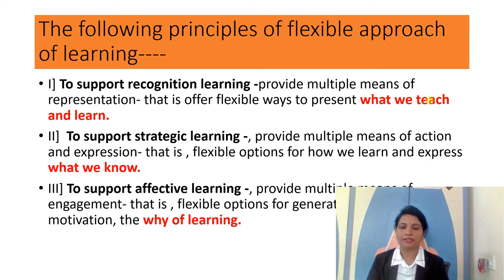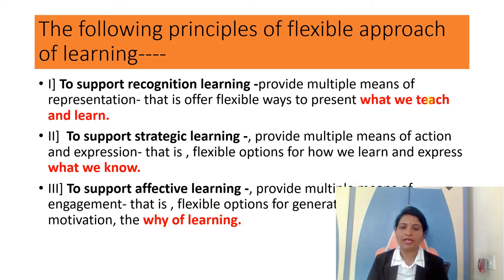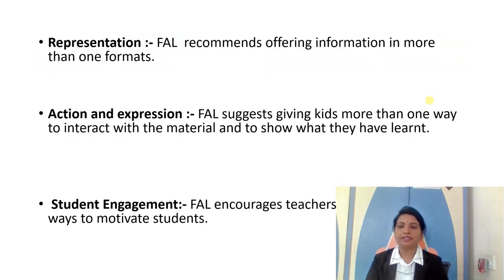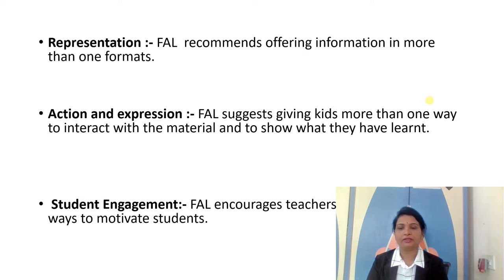The 'why of learning' ties these three principles together. When you observe these three principles, three things are important: what we teach and learn, how we express what we know, and the why of learning. The three key terms involved in the flexible approach of learning are representation, action and expression, and student engagement. These three things are very important in the flexible approach of learning.